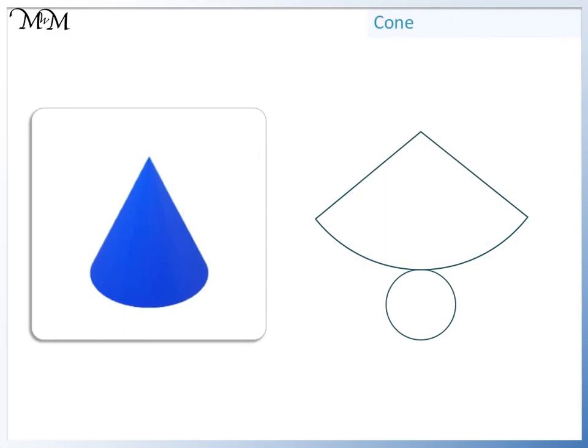Here we have a cone. The only 2D shape found on the surface of a cone is a circle.